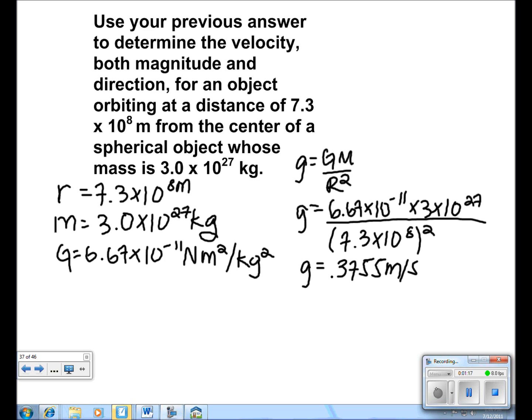In order to find the velocity, we use the formula a equals v squared over r. Since a is the same as g, we plug in that, and we get g is equal to v squared over r. We solve for v, and we get v is equal to the square root of gr.